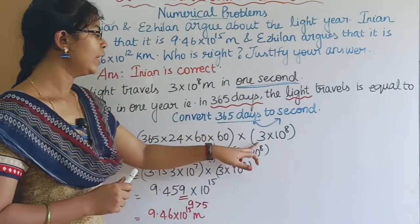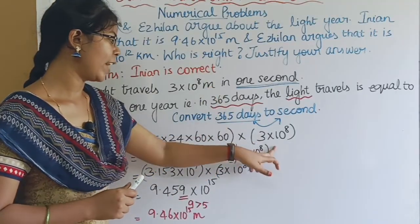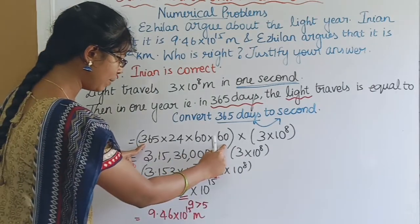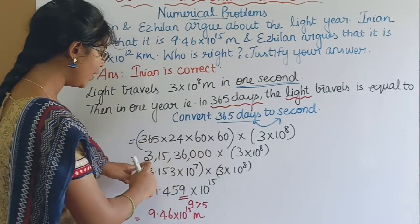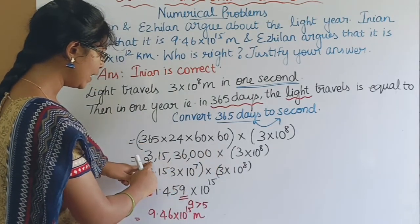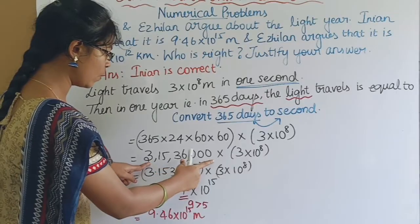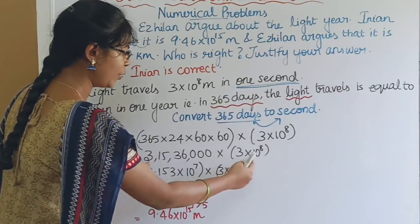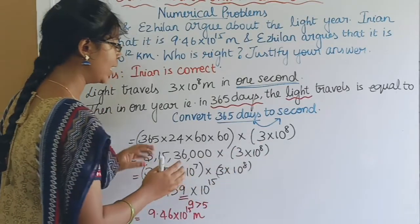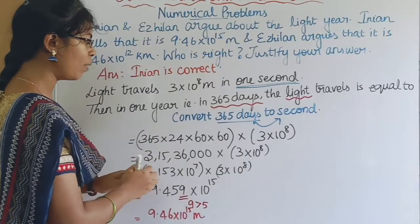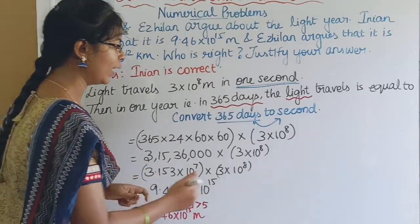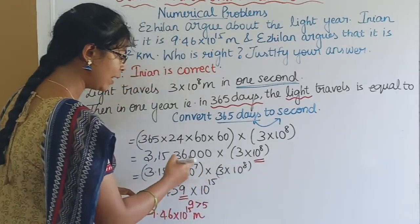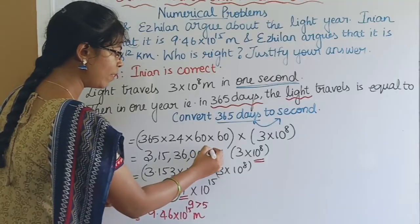We multiply this value by the speed of light, which is 3 × 10⁸ meters per second. 365 × 24 × 60 × 60 gives approximately 3.153 × 10⁷ seconds. We then multiply 3.153 × 10⁷ by 3 × 10⁸.